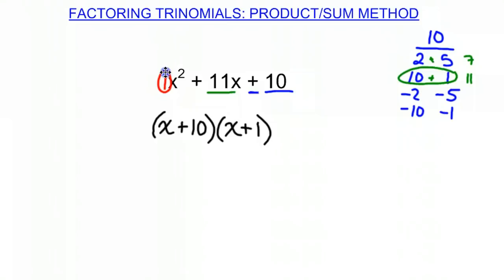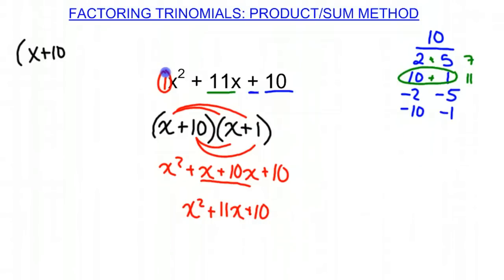Now if we factor it out, we can check our answer. So if we distribute to both terms, we get x squared plus x plus 10x plus 10. We combine like terms, x squared plus 11x plus 10, which is what we started with. That is how we know that x plus 10 times x plus 1 is the factored form of what we were given.